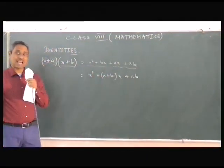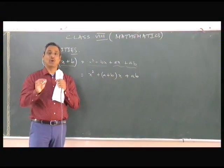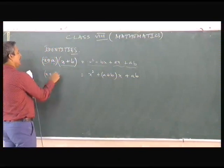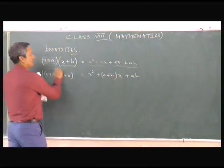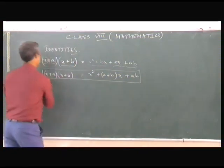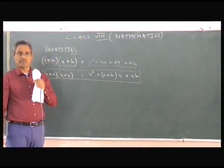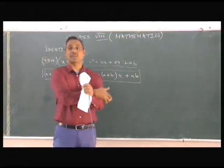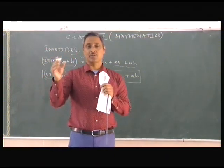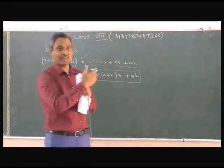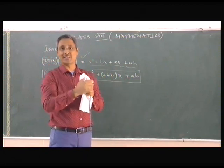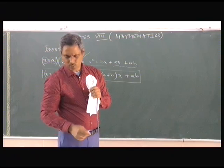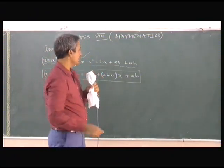We call this an identity or special product. So (x + a) into (x + b) is an identity or special product. From now on, you won't be multiplying as you did in Chapter 11 — whenever you see binomials into binomials you will begin to employ identities or special products.